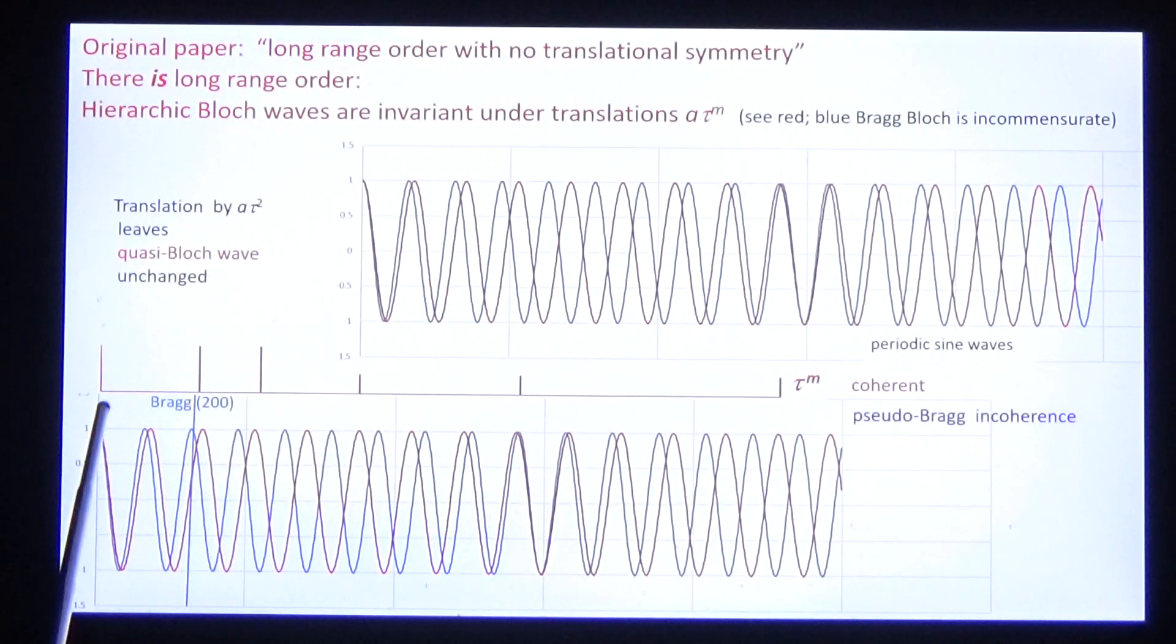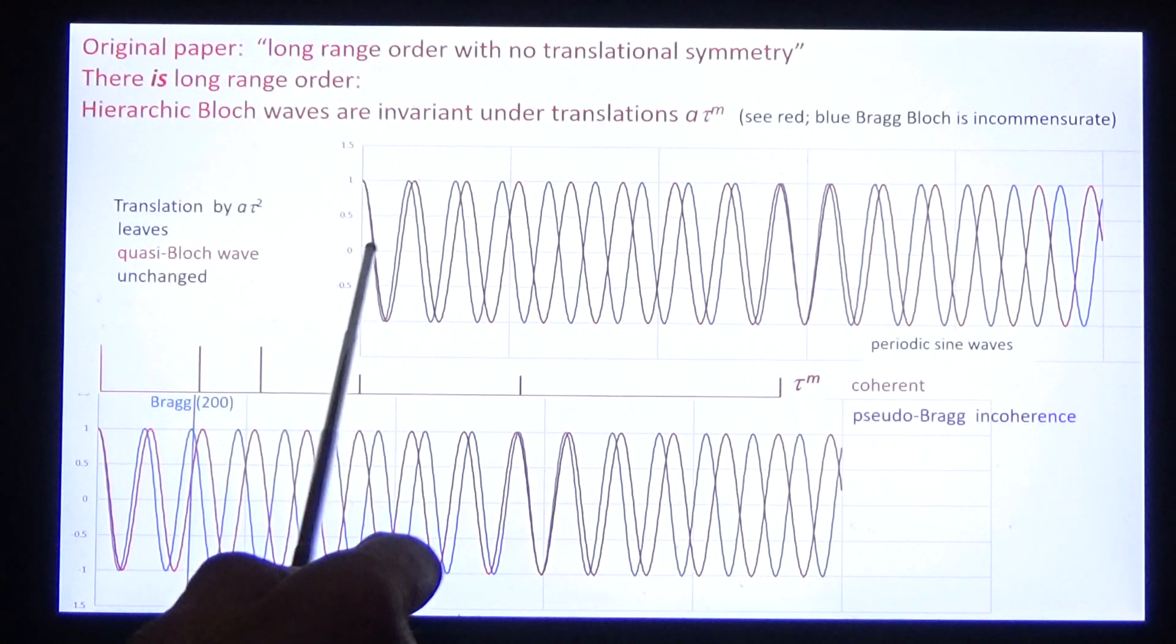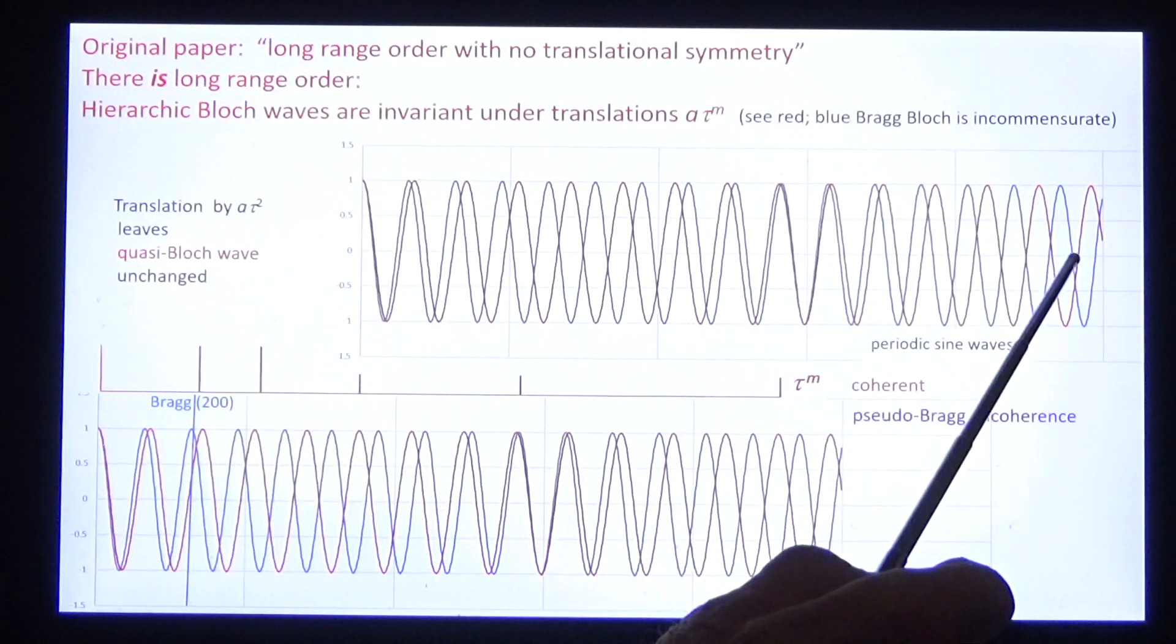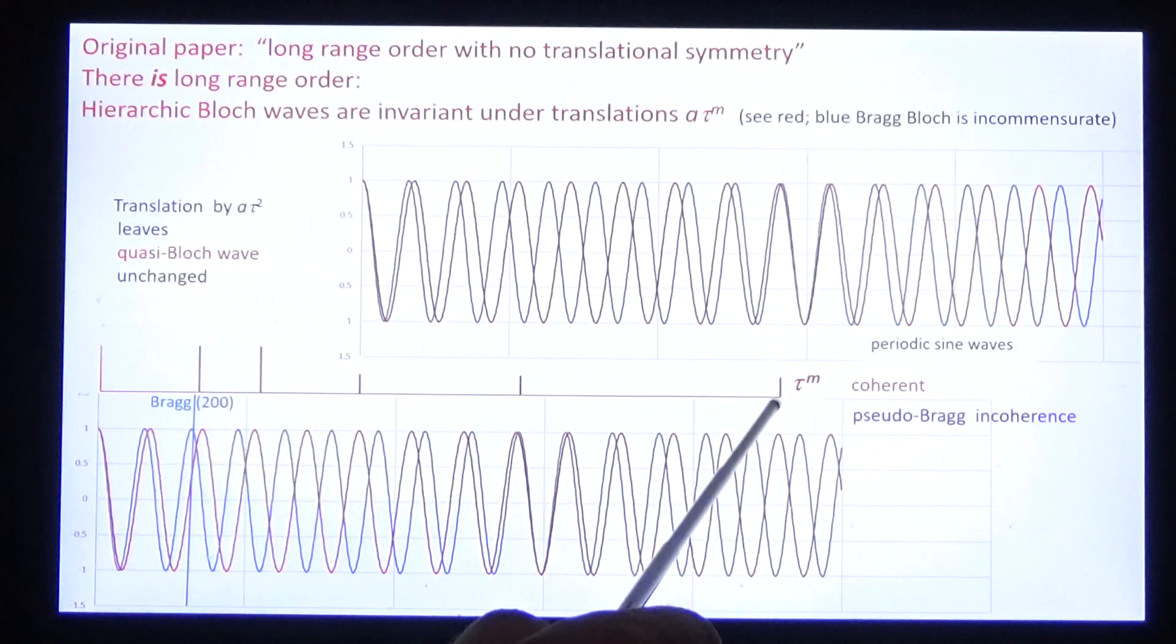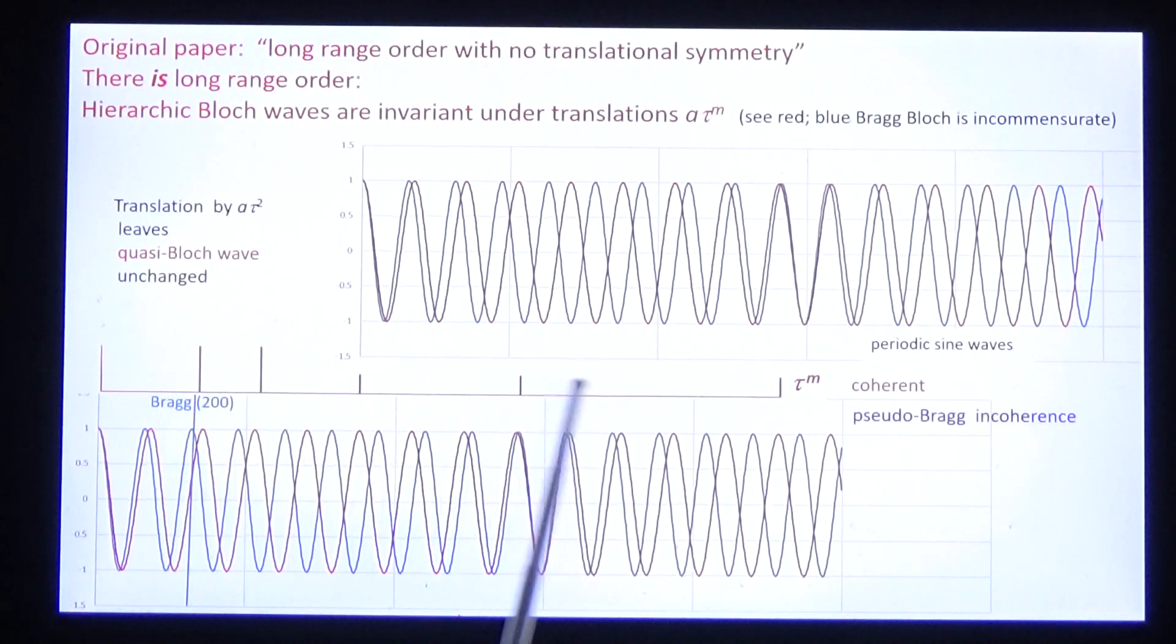But when we stretch the pseudo-Bragg Bloch wave by the metric function, we get the quasi-Bloch wave. And this is commensurate at all geometric intercepts. It's commensurate not only long-range, but also short-range.